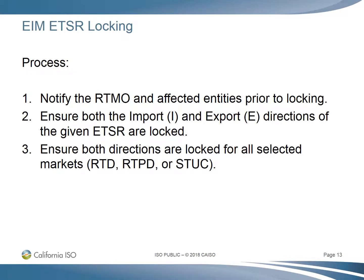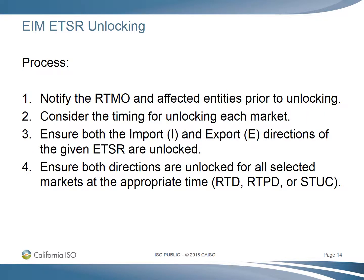The ETSR locking process has three basic steps: notify the RTMO and the affected entities prior to locking; ensure that both the import and export directions of the given ETSR are locked; and ensure that both directions are locked for all of the selected and appropriate market timeframes. To unlock an ETSR, notify the RTMO and the affected parties prior to unlocking, consider the timing for unlocking each market, ensure both import and export directions are unlocked, and ensure both directions are unlocked for all selected market timeframes at the appropriate time.